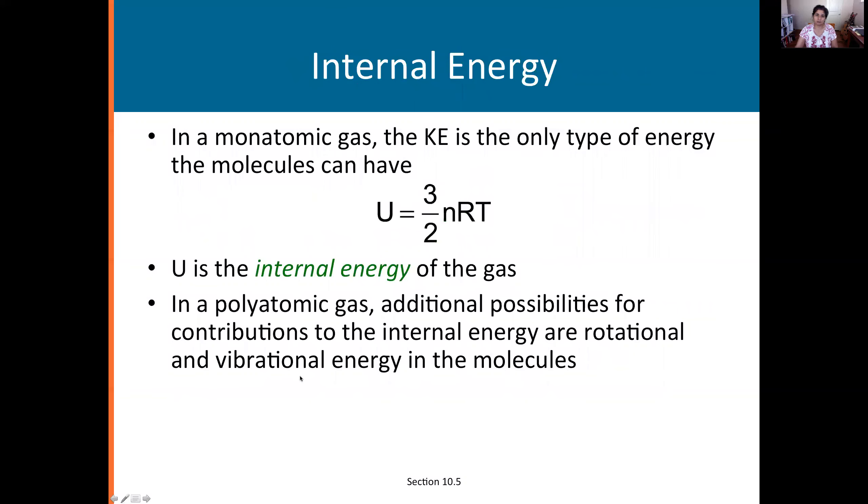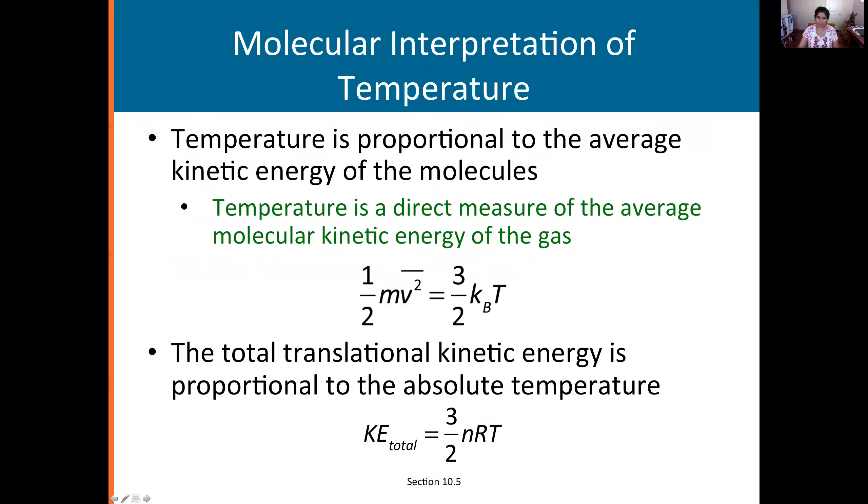Okay so next concept internal energy which is represented by this symbol U and it's defined as U equals 3 over 2 nRT. Internal energy is the sum of all the energies. So it's the sum of kinetic and potential energies. That same 3 over 2 energy that we had in the previous page. Since all my energy is only kinetic for this gas, the total internal energy must be the same 3 over 2 nRT which was the same as the total kinetic energy.